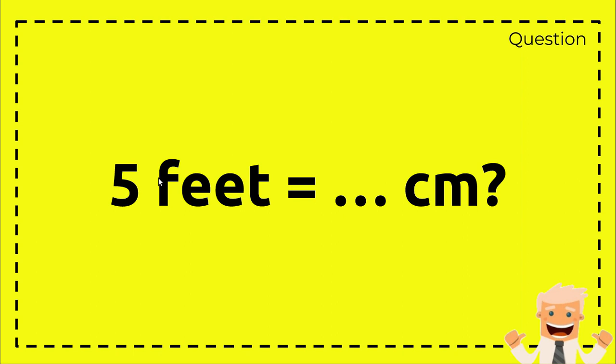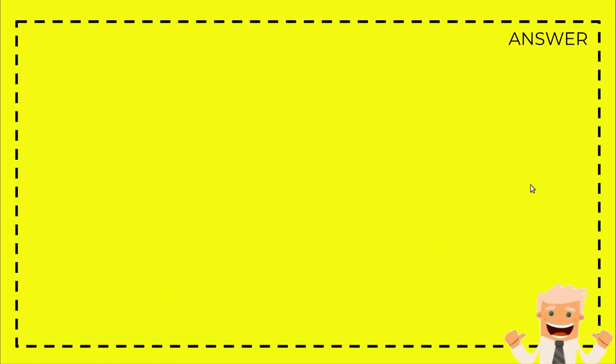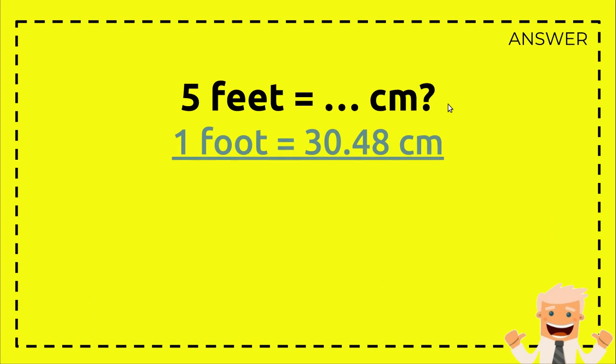So 5 feet equals how many centimeters? This is the answer section. First, just write down the question again: 5 feet equals how many centimeters. And then we write the formula again: one foot equals 30.48 centimeters.